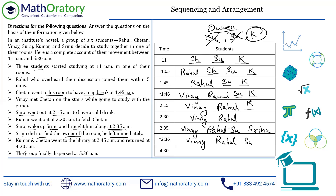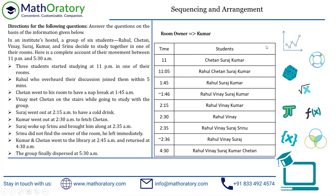Kumar and Chetan went to the library at 2:45am but returned at 4:30am — that's why I've taken 4:30am as one of the rows. When Kumar and Chetan come back, Vinaya, Rahul, Suraj, Kumar, and Chetan are the five people remaining. The group finally dispersed at 5:30am, which means from 4:30 to 5:30 these five individuals remain in the room. I've now converted this to a proper table. Let's get into the questions.